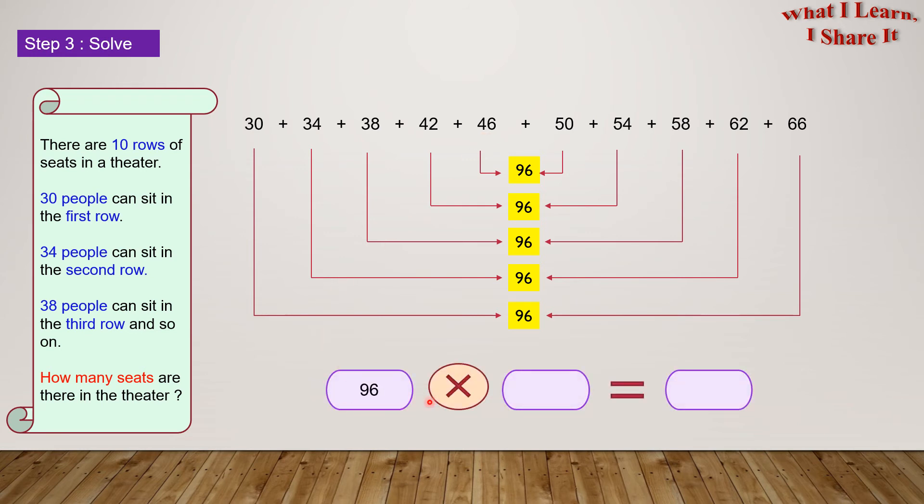96 times 1, 2, 3, 4, 5 times, so times 5, equals 480. There are 480 seats in the theater.